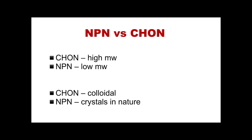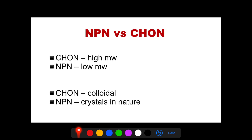Let's differentiate NPNs and proteins. Proteins are high in molecular weight, that's why they are also called macromolecules. NPNs have low molecular weights. Your proteins are colloidal in nature — they are opaque and large, so when present in a specimen they cause turbidity or haziness. On the other hand, your NPNs are crystalline in nature, so usually they don't cause turbidity or haziness in your specimen.